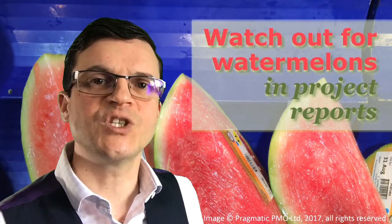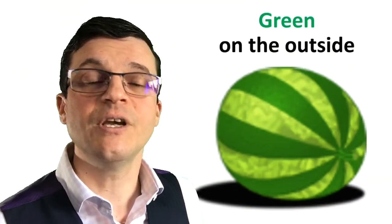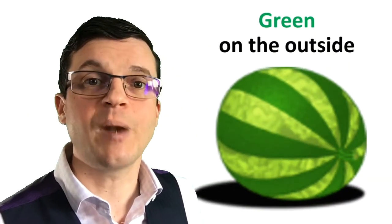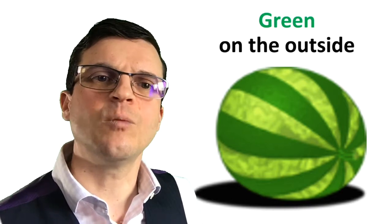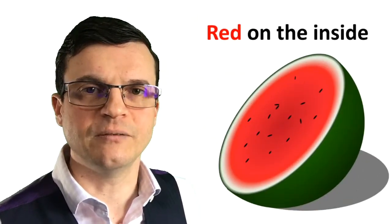Watermelon Reporting describes the phenomenon where according to a project status report everything is green on the outside so there are no problems and everything is going to plan. But if you delve into the detail what you find is that actually the project is red on the inside right through to the middle like a watermelon.